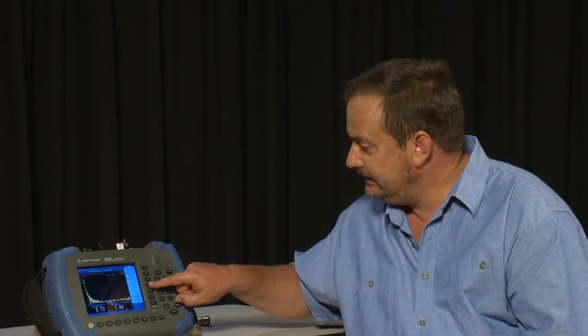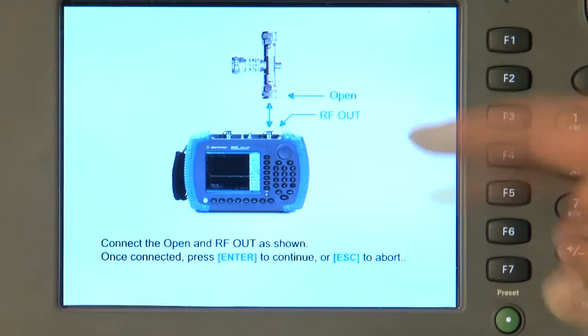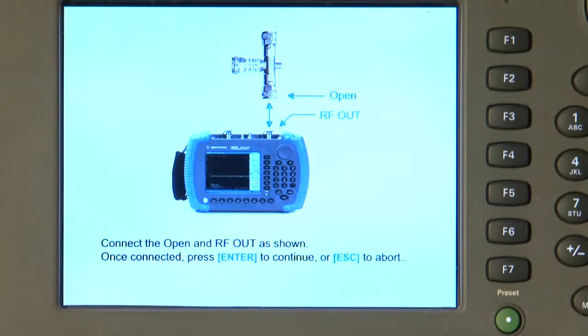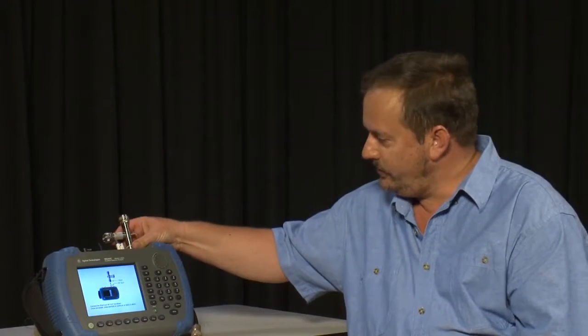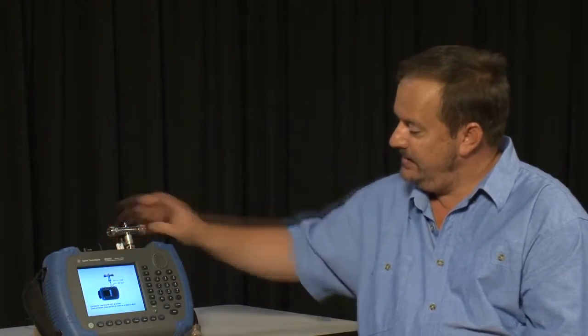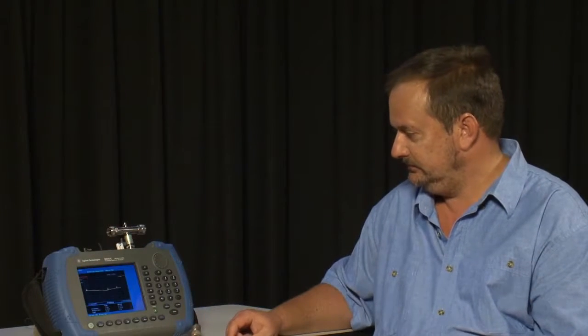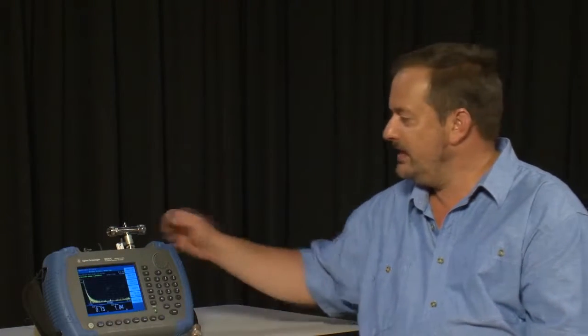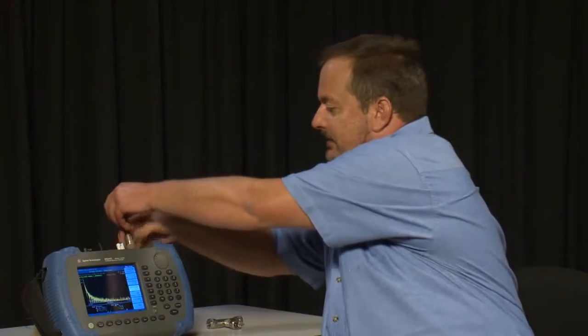Next, we need to perform a calibration like we did previously. So I will press Frequency and Calibrate and we just follow the instructions. So I will connect the Open and press Enter. We connect the Short and press Enter. And we connect the Load and press Enter. So the instrument is now calibrated. So all I have to do now is connect my cable.